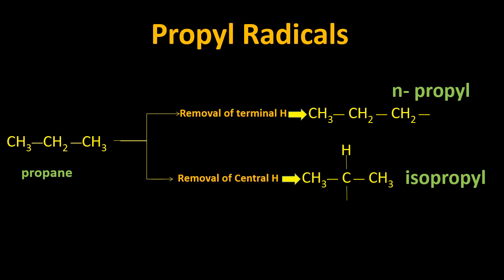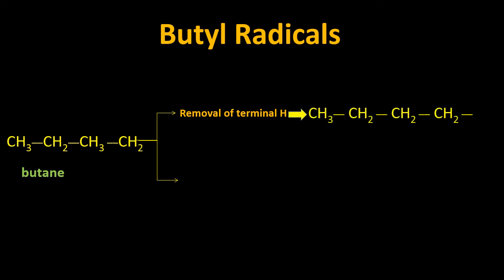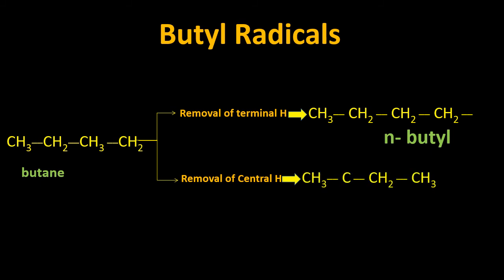Both n-propyl and isopropyl are alkyl radicals of propane. For butyl radicals, the word butyl comes from butane, a 4-carbon compound. When hydrogen is removed from terminal carbons (carbon 1 or carbon 4), it is known as n-butyl. When hydrogen is removed from a central carbon (carbon 2 or 3), one hydrogen remains on that carbon and it is named secondary butyl — so the name changes just by changing the carbon from which hydrogen is removed.